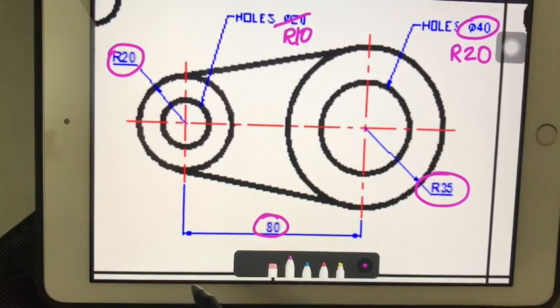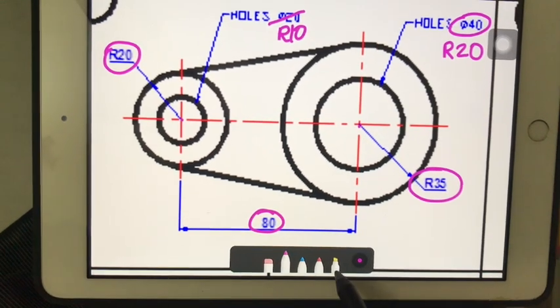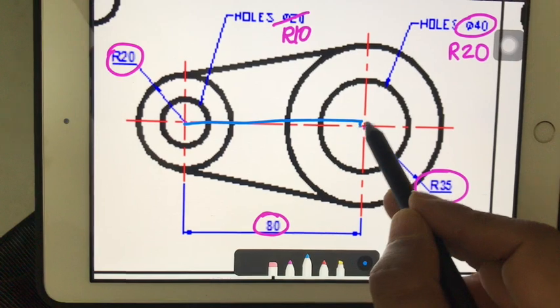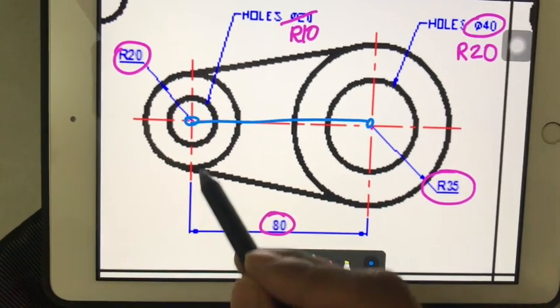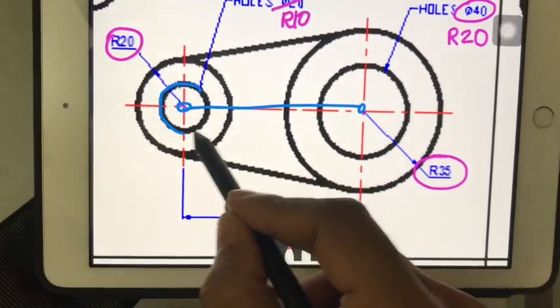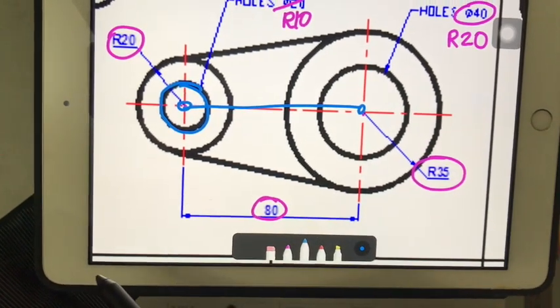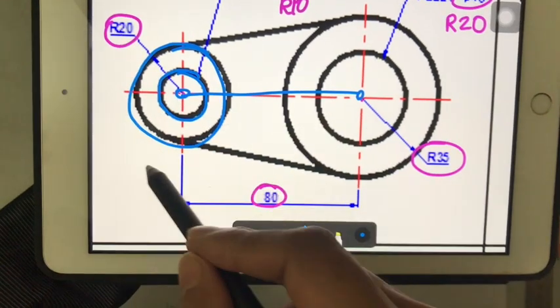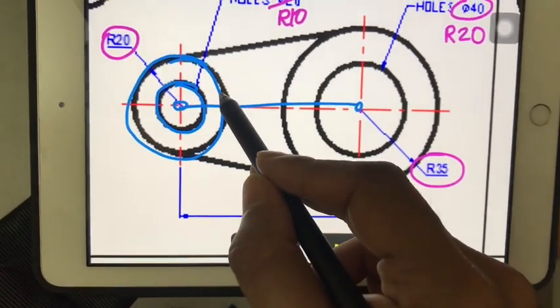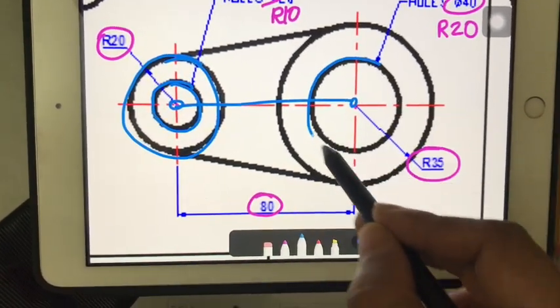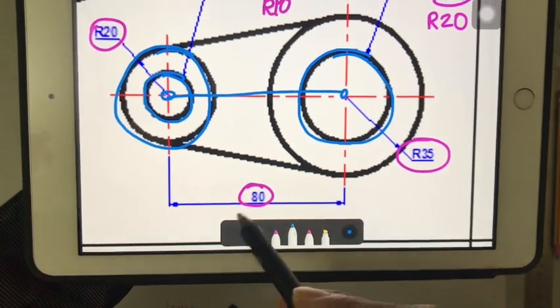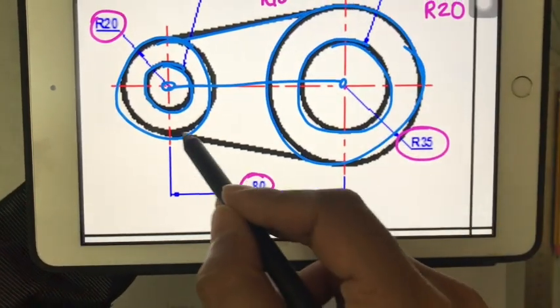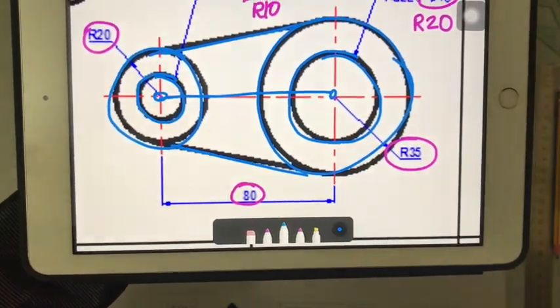My plan is to draw a straight line of 80 millimeters. With this as center I will first draw a circle of radius 10, then I will draw a next circle of radius 20. With the same radius I'll draw this circle, and then I'll make a circle of radius 35 and then let's join these two lines.